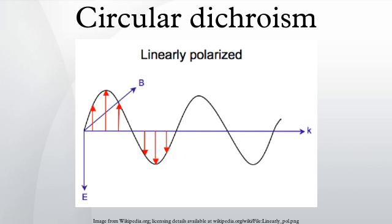Simply put, since circularly polarized light itself is chiral, it interacts differently with chiral molecules. That is, the two types of circularly polarized light are absorbed to different extents.